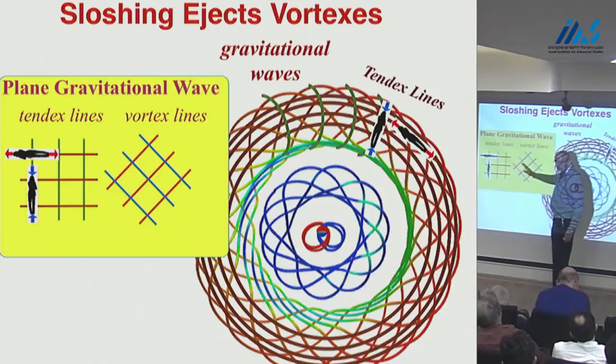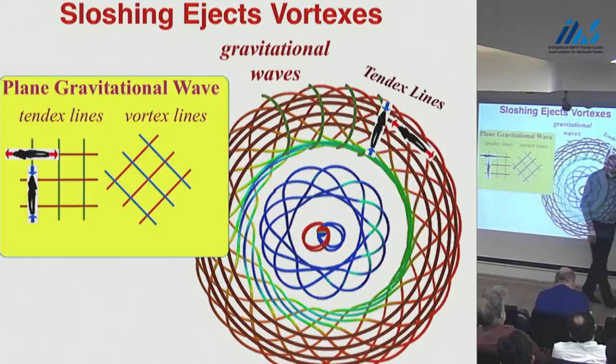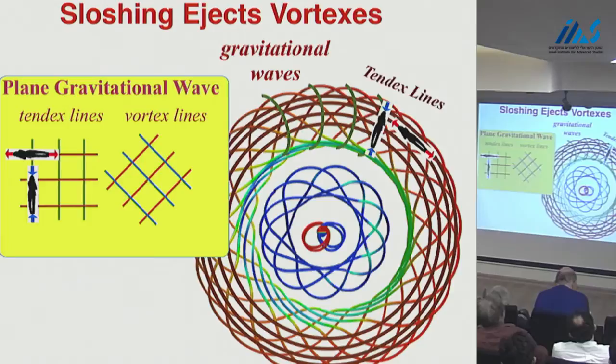The vortex lines are twisted by 45 degrees, and this is related to the spin of the graviton — specifically, to the fact that the spin of the graviton is 2 rather than 1, so all angles are cut down by a factor of 2 from what you're accustomed to electromagnetically.